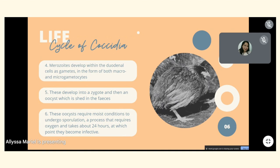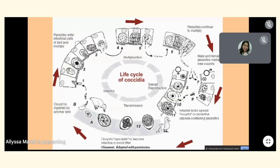The merozoites develop within the duodenal cells as gametes in the form of both macro and micro gametocytes. This develops into a zygote and then an oocyst which is shed in the feces. These oocysts require moist conditions to undergo sporulation, a process that requires oxygen and takes about 24 hours, at which point they become infective.